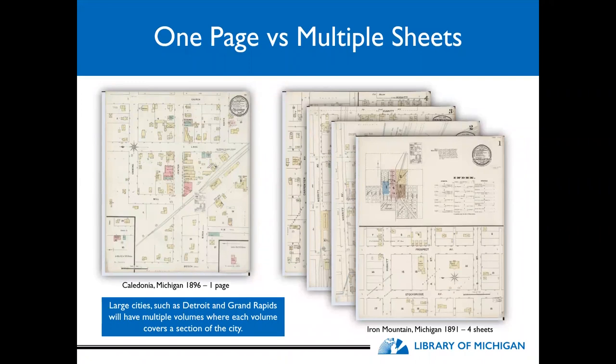You can often find that a smaller town will have just one page, versus larger cities which will have multiple sheets identifying different aspects of the town. For example, on the left we have Caledonia in 1896, which has just one page giving the layout of the few streets in downtown Caledonia. A medium-sized city such as Iron Mountain in the Upper Peninsula in 1891 had four sheets, including the partial index on page one. Large cities such as Detroit and Grand Rapids will have multiple volumes, where each volume covers a section of the city.